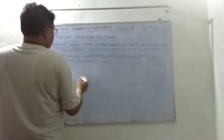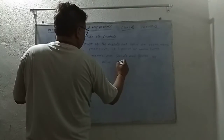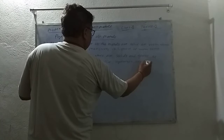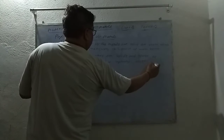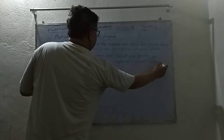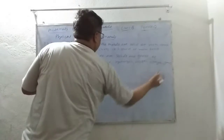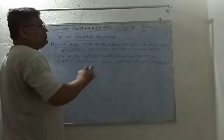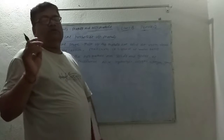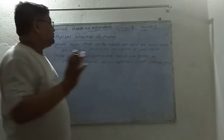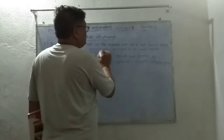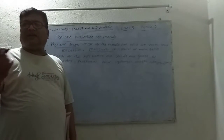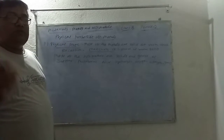Examples of solid non-metals include sulfur and phosphorus. Examples of gaseous non-metals include hydrogen, oxygen, and nitrogen. Mercury is a metal that is liquid at room temperature.